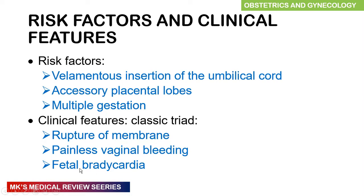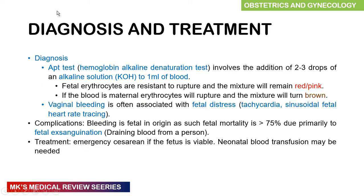Vasa previa can be difficult to distinguish from placenta abruption on exam questions. Diagnosis involves determining whether the blood is coming from the mother or the fetus using the APT test: take a sample of blood, add two to three drops of alkaline solution — potassium hydroxide. If the red blood cells remain pink, they are resistant to the alkaline environment, indicating fetal red blood cells. If they become hemolyzed and the solution turns brown, this indicates maternal blood.